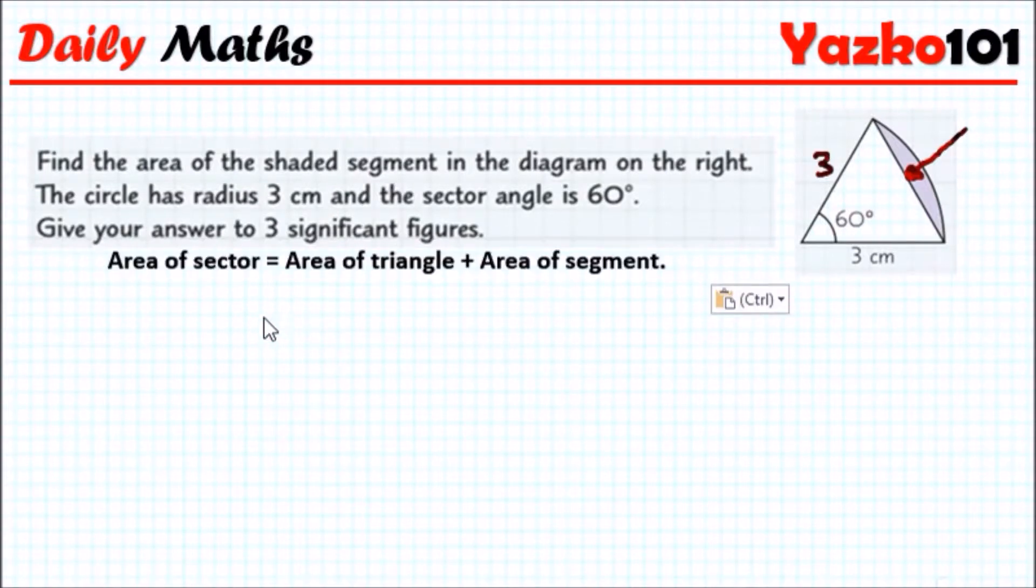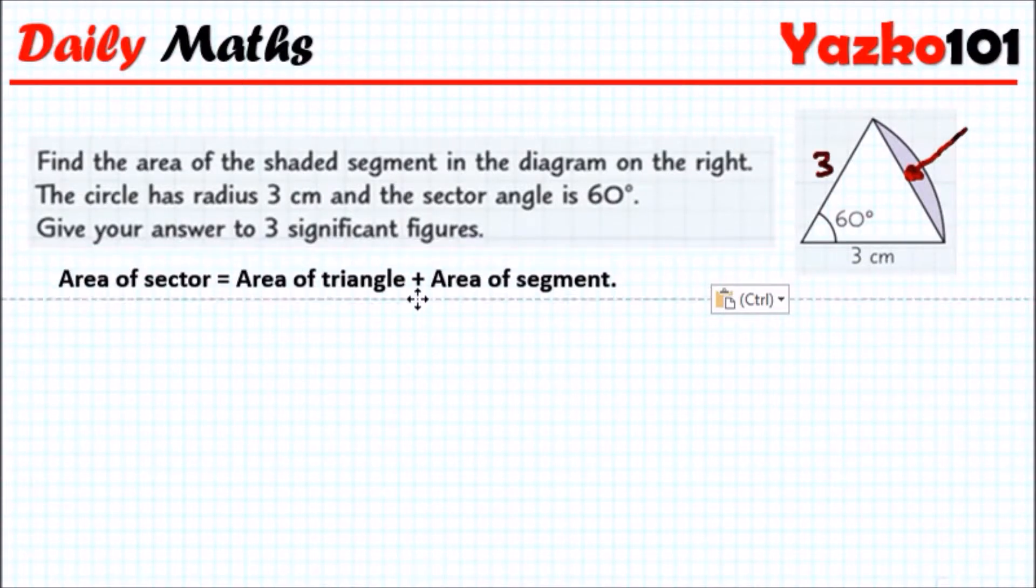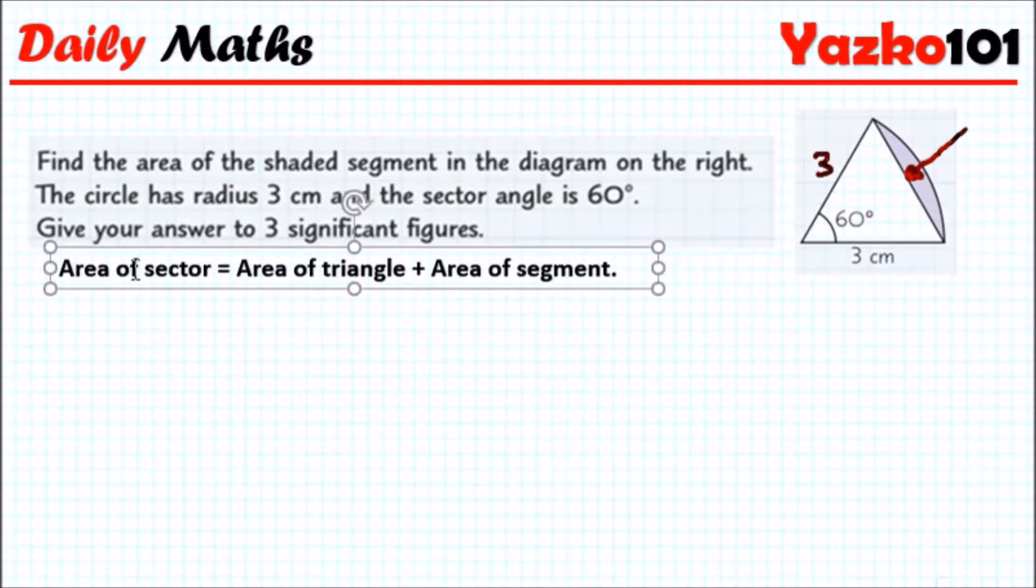The area of a sector is comprised of the area of a triangle and the area of a segment. Unfortunately, we don't have an area segment formula, so we need to find it by calculating the area of the sector first, then the area of the triangle, and then rearrange it to find the area of the segment.